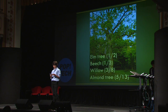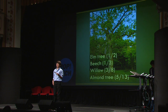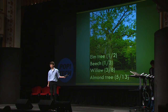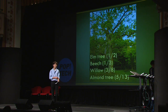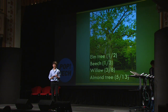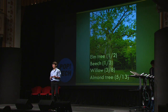Different types of trees have different Fibonacci patterns. For example, the elm tree is 1 to 2, the beech tree is 1 to 3, the willow tree is 3 to 8, and the almond tree is 5 to 13.